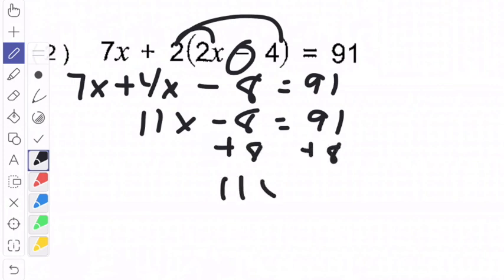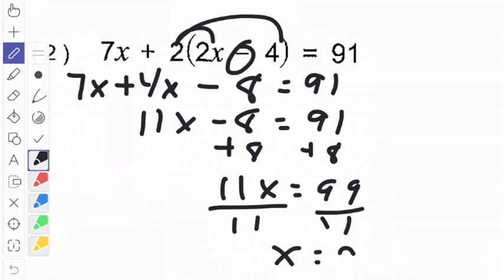Once I do that, I get 11x equals 99. Simple division. Divide by 11 on both sides of the equation. And x will equal 9.